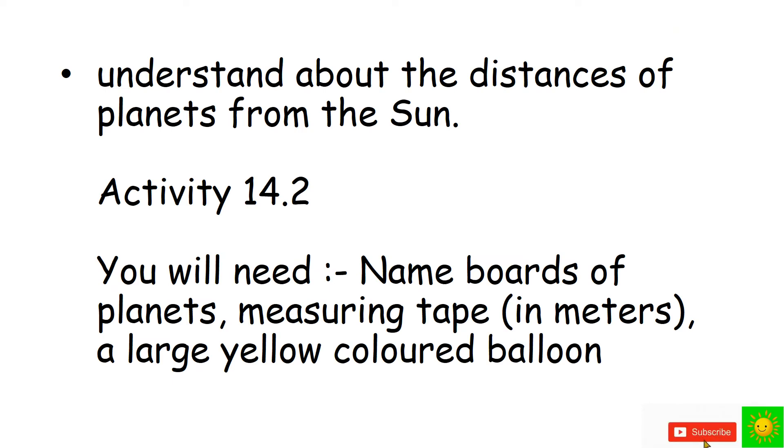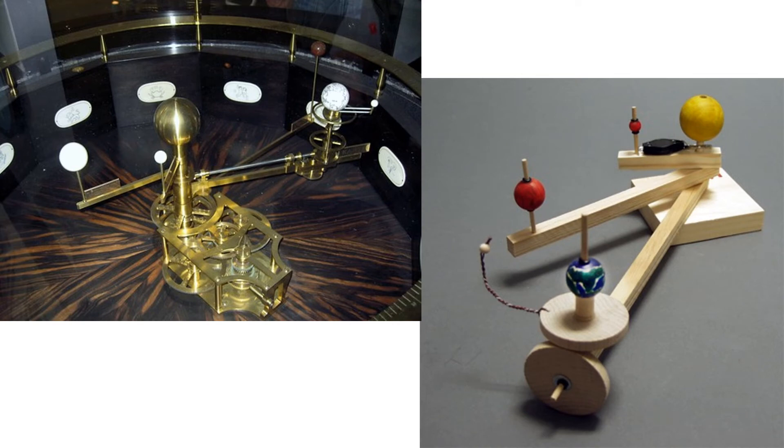Let's understand about the distances of planets from the Sun. You will need name boards of planets, measuring tape, large yellow color ball. You have to mark a point at the center of the school playground. Take that point as center. Draw circles taking the radius according to the ratio given in the table. Get the assistance of your teacher. Place the inflated balloon at the center of the playground. Apply shrink line on the circles. Mark the ground. Place the name boards of each planet on the circle position. Give each student at the name board a leaflet with information of that planet. Direct students in your class at times to each name board. The student at the name board to describe about the planet that he or she is responsible for. Now you have a comparative knowledge about the planets.